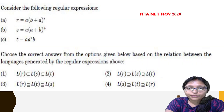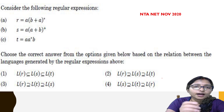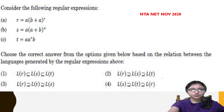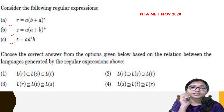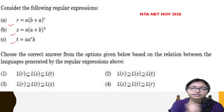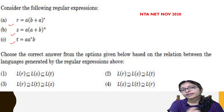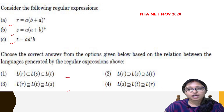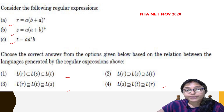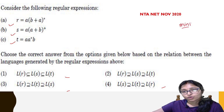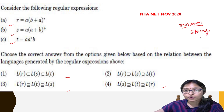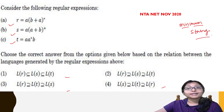Now come to the question. Through the question only you will understand the concept of how to identify subset and superset. Here R, S, and T are three languages, meaning three regular expressions. From these regular expressions, always try to ask yourself: what is the minimum string you can generate with this regular expression?